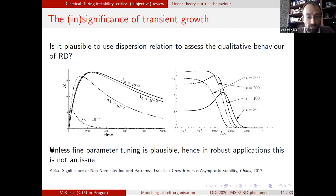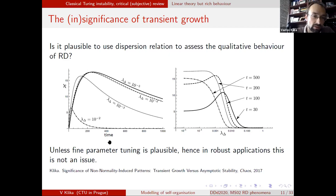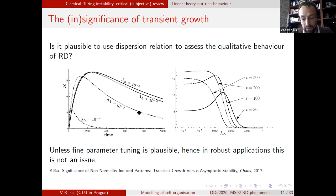The positive conclusion is that, unless fine parameter tuning is considered plausible, we don't have to worry about these subtleties too much — one can show that high transient growth regimes appear only in the vicinity of the boundary of Turing space.